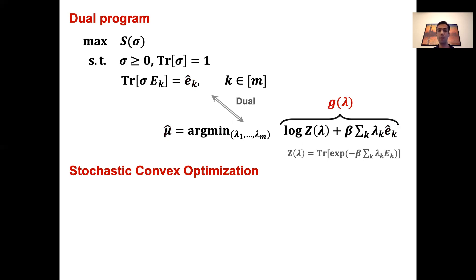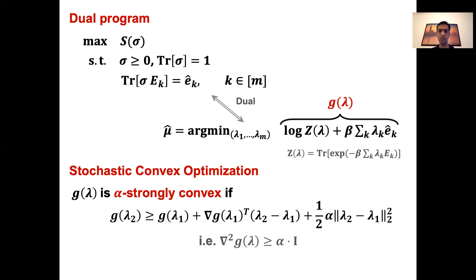This problem is an instance of stochastic convex optimization. And there is a property of the objective function G(lambda) called the strong convexity, that can be used to analyze the robustness and the sample complexity. We say a function is alpha strongly convex if, at any point, we can lower bound it by this quadratic function. Or equivalently, if the Hessian of this function, whose entries are the second order derivative, is lower bounded by alpha times the identity operator.